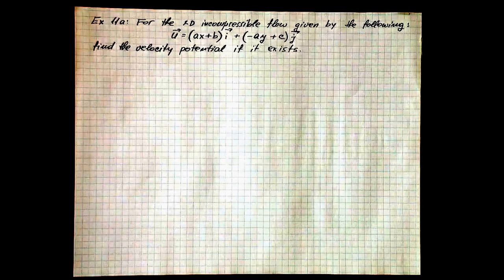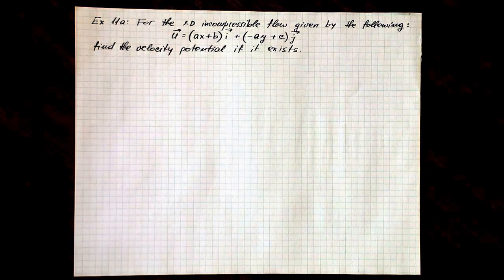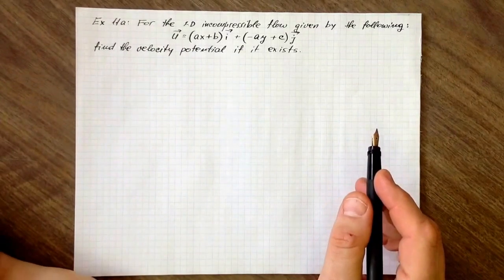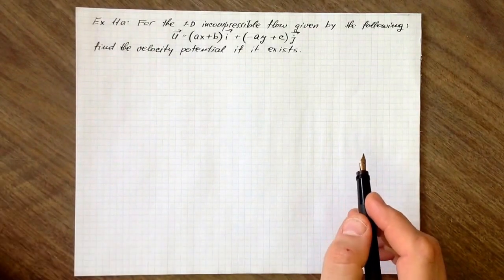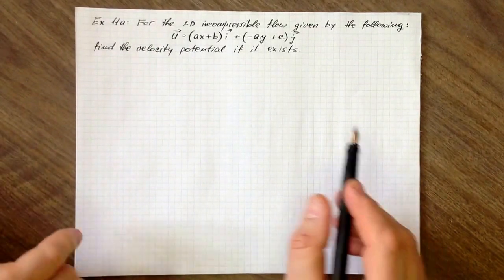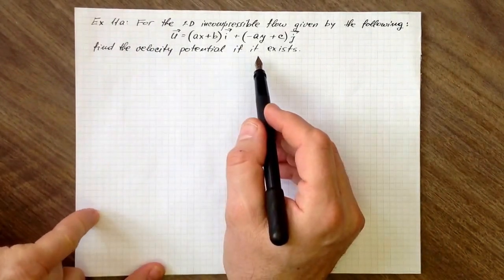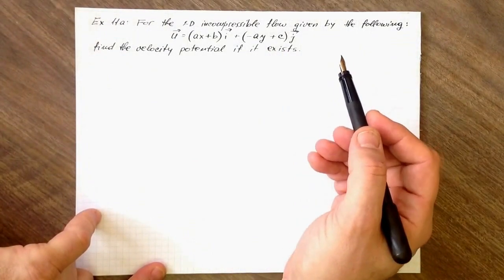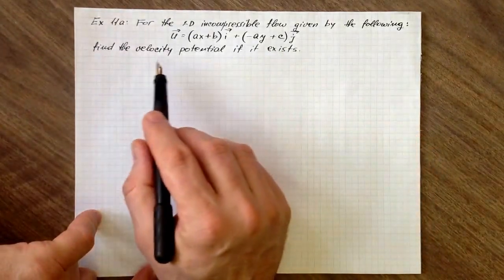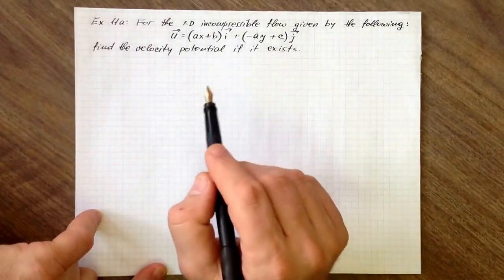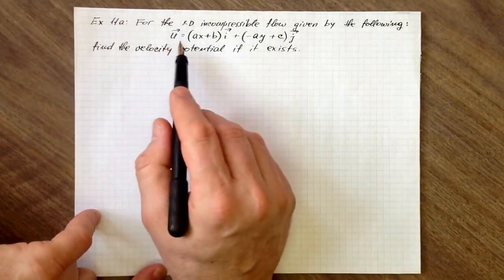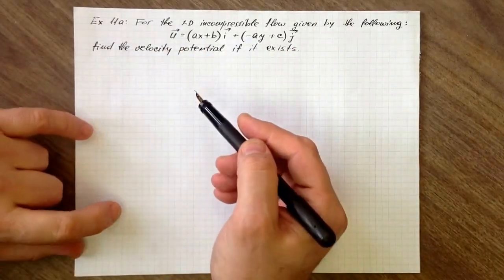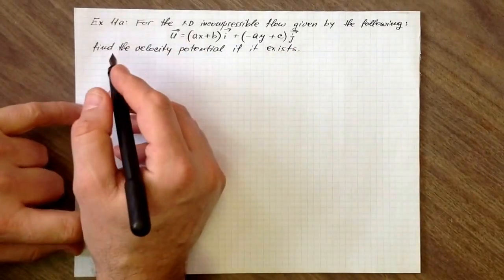Hello. In this example, we're going to find out if the velocity potential exists, i.e., if the flow is irrotational, and then, if so, to find the potential function based on this expression for the velocity field.